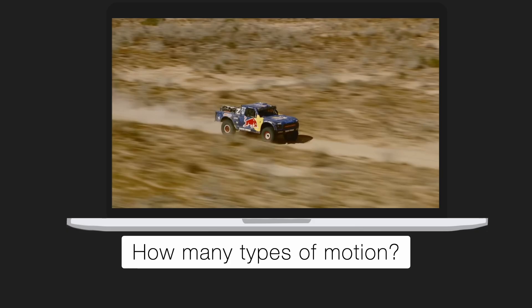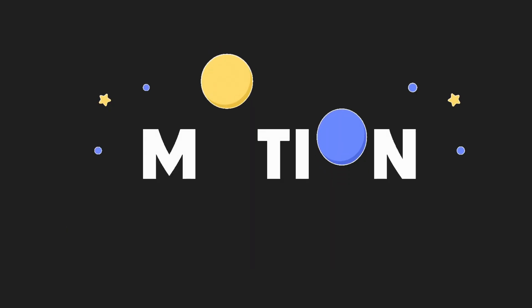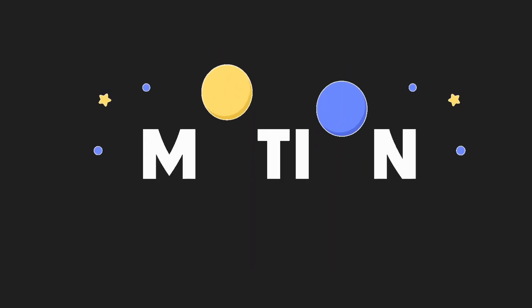Understanding these types of motion is exactly what helps engineers design machines that can survive in such extreme conditions. Because when you're dealing with high speeds, rugged terrain, and a race where the margin of error is razor thin, you've got to understand motion deeply. So let's take a step back from the racing and explore motion through a few everyday examples, then we'll come back to the Baja 1000 race.